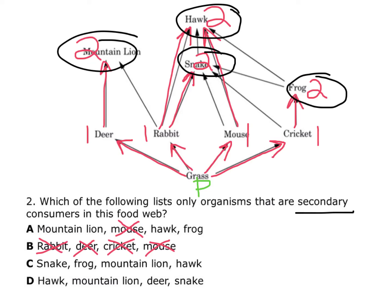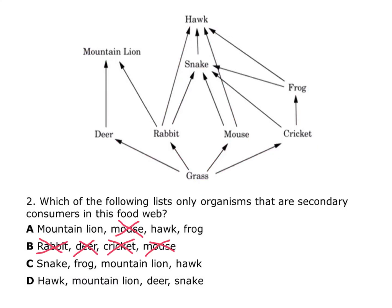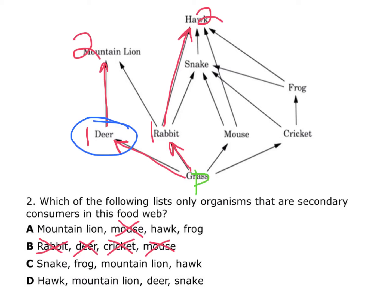But we always want to check all answer choices to make sure we didn't make a mistake. Going through D quickly: going to hawk — rabbit would be primary, hawk would be secondary. Mountain lion — deer would be primary, making mountain lion secondary. And deer — deer is a primary consumer, making that an incorrect answer. So now I can clearly see that answer choice C is the correct answer to this question.